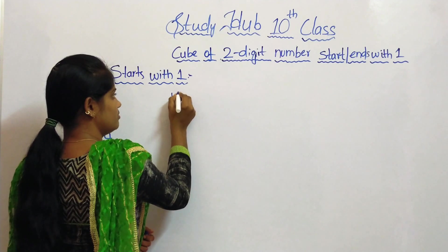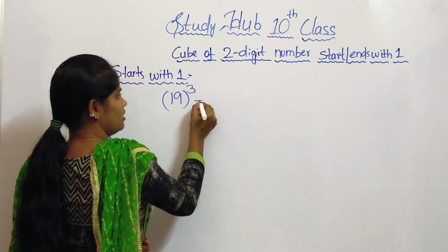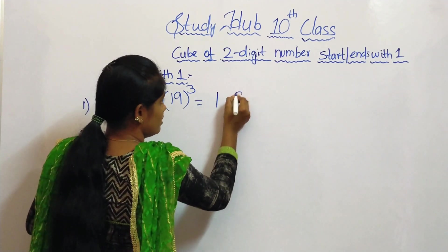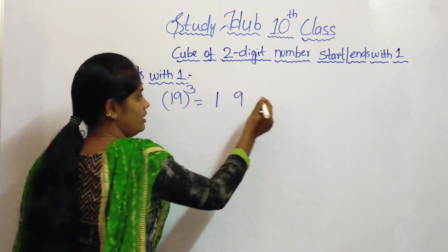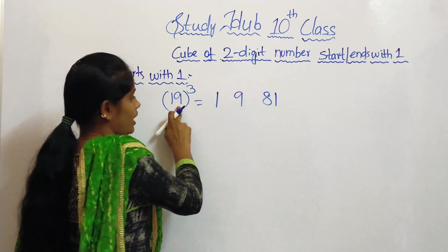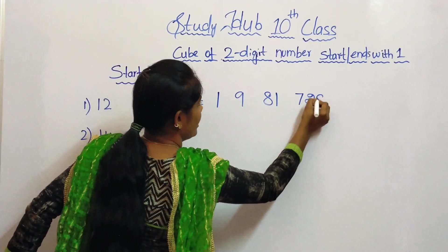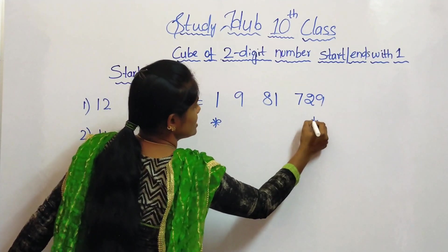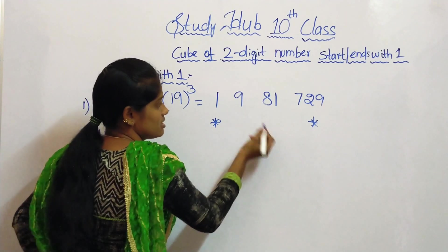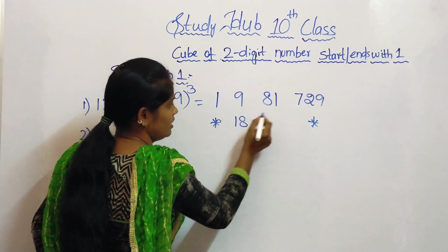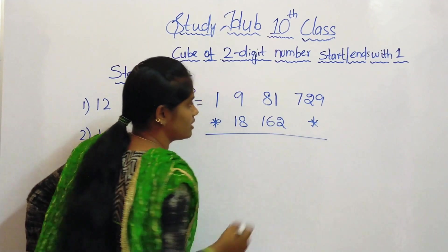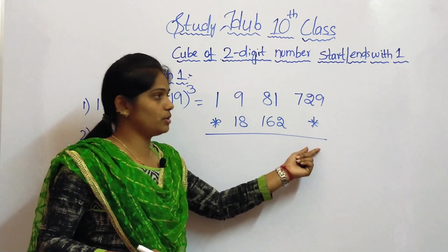Third example: 19 cubed. First and second places: 1 and 9 are the digits, written as it is. In the third place, take the square of 9 — that is 81. And in the fourth place, take the cube of 9 — 9 cubed is 729. Now exclude the first and fourth places and take twice of 9 and 81. Here we have a 3-digit number but we need to write only 1 digit.